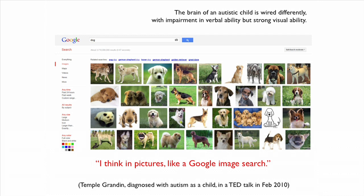On the other hand, they have very strong visual abilities. And in fact, a very famous person with autism once said, I think in pictures, like Google image search.